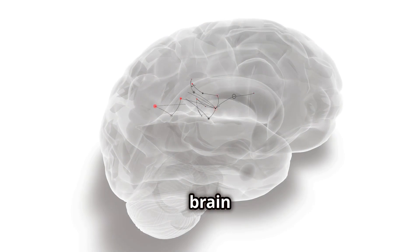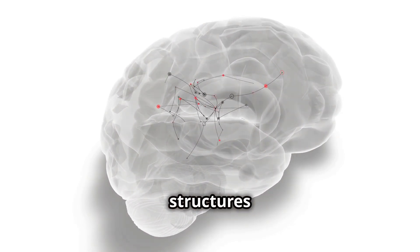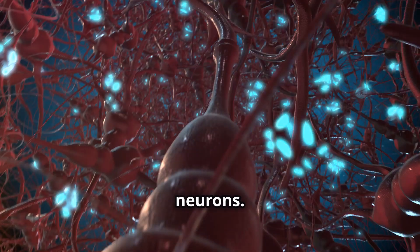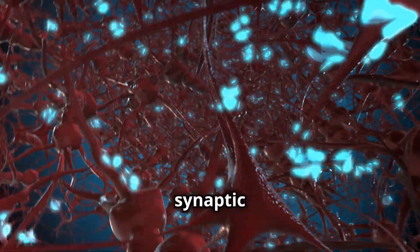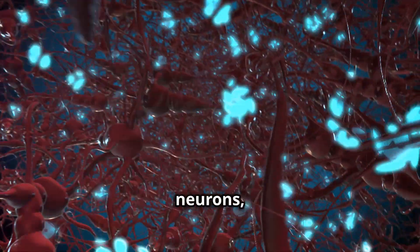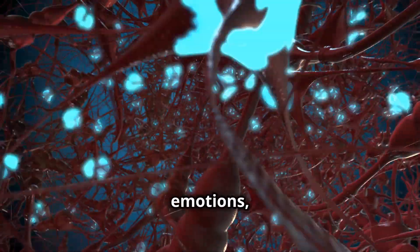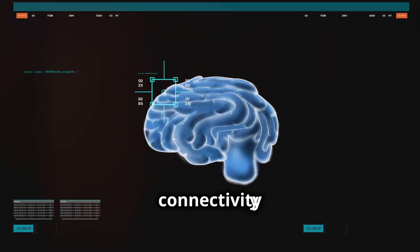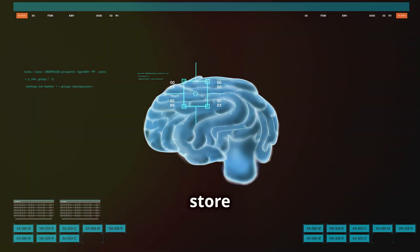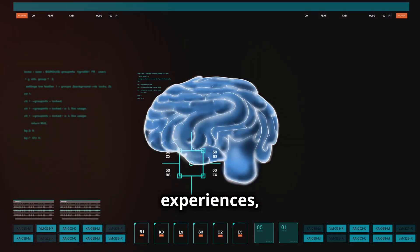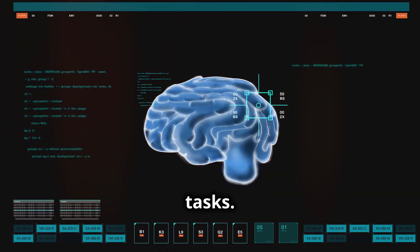The human brain is one of the most complex structures in the universe, containing approximately 86 billion neurons. Each neuron can form thousands of synaptic connections with other neurons, creating an intricate network that underlies all our thoughts, emotions, and actions. This vast connectivity allows the brain to process and store enormous amounts of information, adapt to new experiences, and perform incredibly sophisticated tasks.